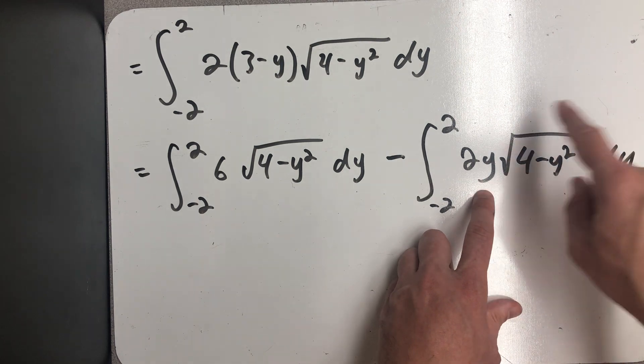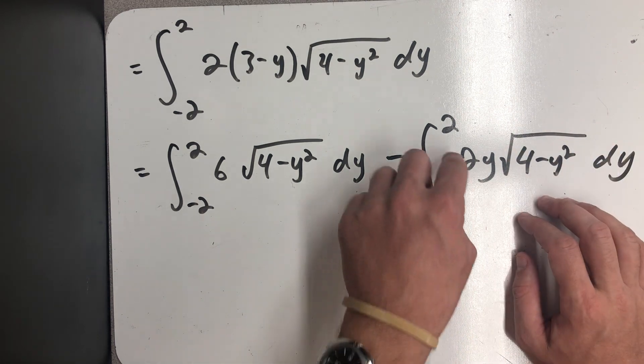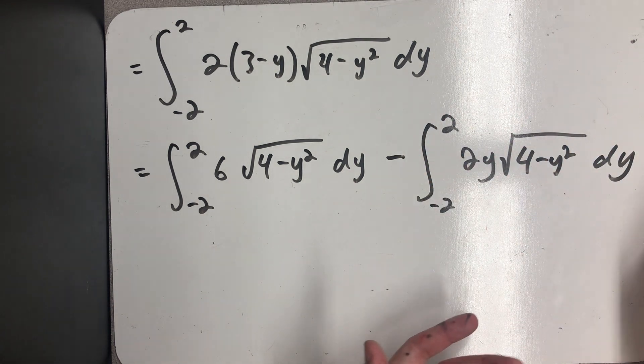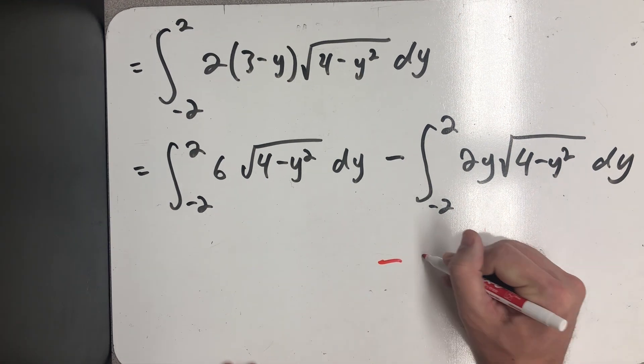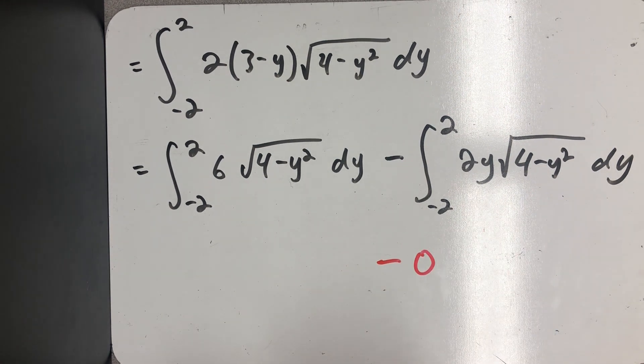So the integrand itself is an odd function over a symmetric interval. It's going to be zero. And you can do a u substitution on it and actually prove that it is zero. But I'm happy with the argument about the odd function because that's just cool.